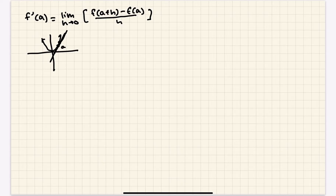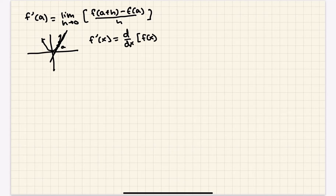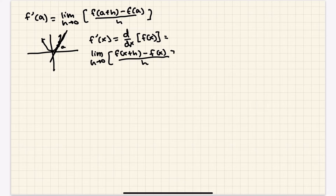There are a few other forms of the difference quotient, but this one's the most common and the one you should mainly know — it's the slope of the tangent line at that point. You can also write the derivative as a function: f prime of x, also written as d/dx of f(x), which equals the limit as h approaches 0 of f(x + h) minus f(x) over h. You'll get an actual function called the derivative. Like with limits, you can determine it graphically, numerically, or analytically.